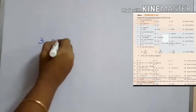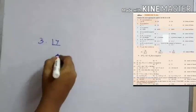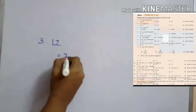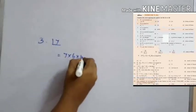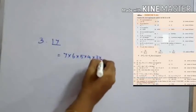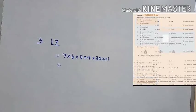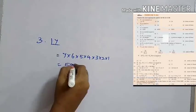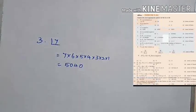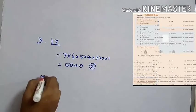The third question is: 7 factorial is equal to. 7 factorial is 7 × 6 × 5 × 4 × 3 × 2 × 1. We reduce it till 1, which gives 5,040. Option A is the answer.